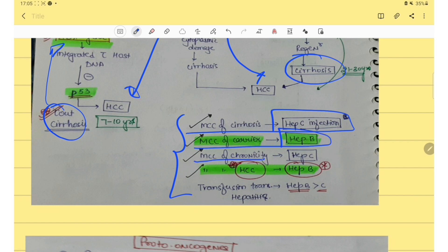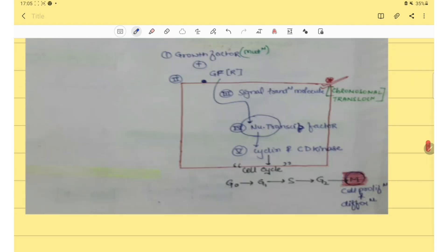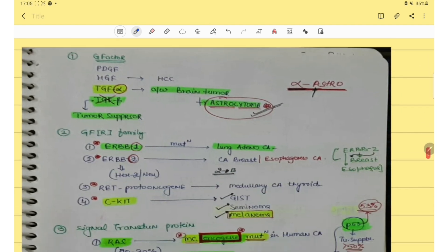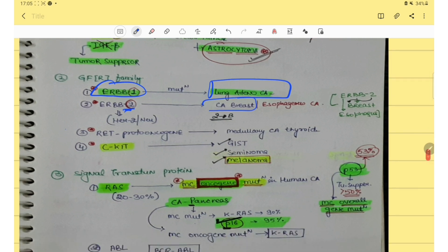Next topic is proto-oncogenes. In proto-oncogenes, we should know about the examples. ERBB1 mutation occurs in lung adenocarcinoma and ERBB2 occurs in CA breast. Then RET proto-oncogene, its mutation occurs in medullary CA thyroid. And CKIT, it's in GIST, seminoma and melanoma.